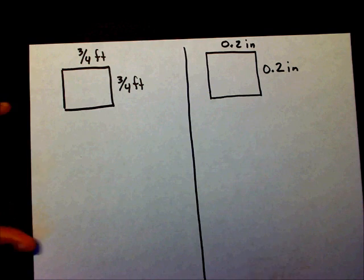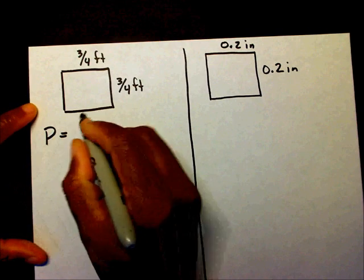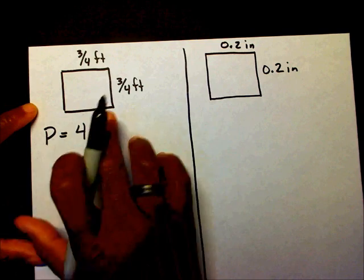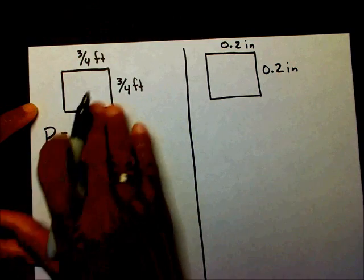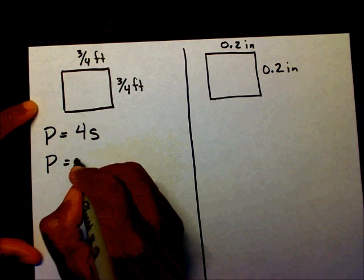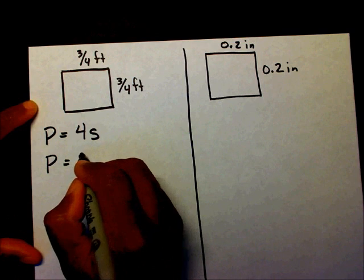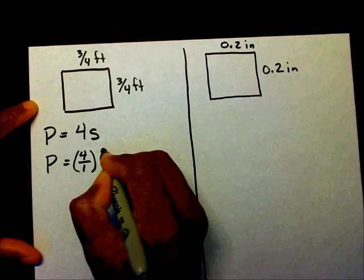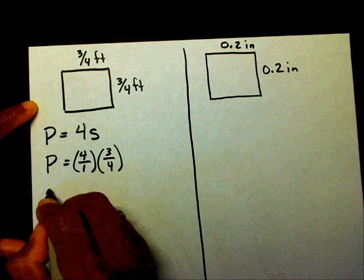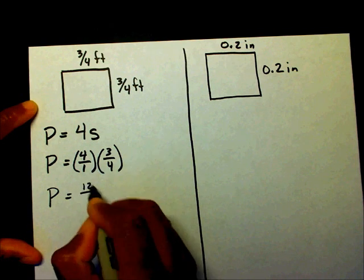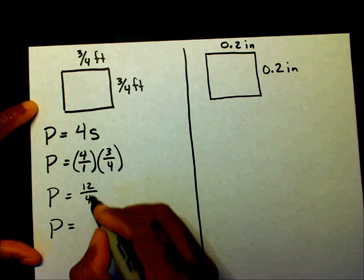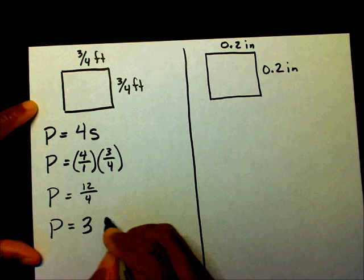Let's get started on the solutions. We have p equals four times s. The reason I'm using four s is because that's the formula for finding the perimeter of a square. So p equals four over one times three-fourths. That gives us four times three which is twelve, over one times four which is four. So p equals twelve divided by four, which is three feet.